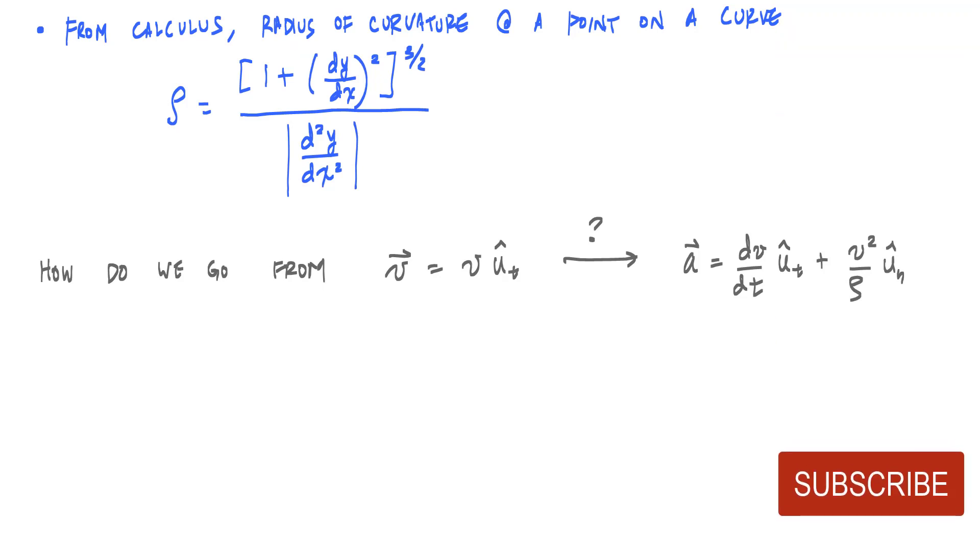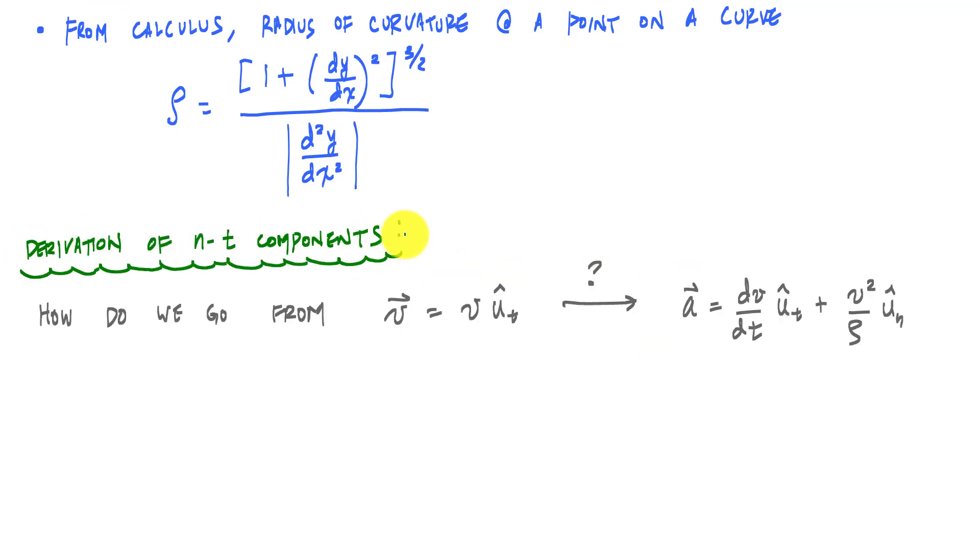All right, so now we want to know how do we go from velocity to acceleration and get these two components in our normal tangential components here. So we want to answer this question: How do we go from velocity to acceleration in n-t components? And we're going to focus on velocity. This definition of velocity here in normal tangential components is simply this magnitude of the speed v times u_t hat. And to get to acceleration,